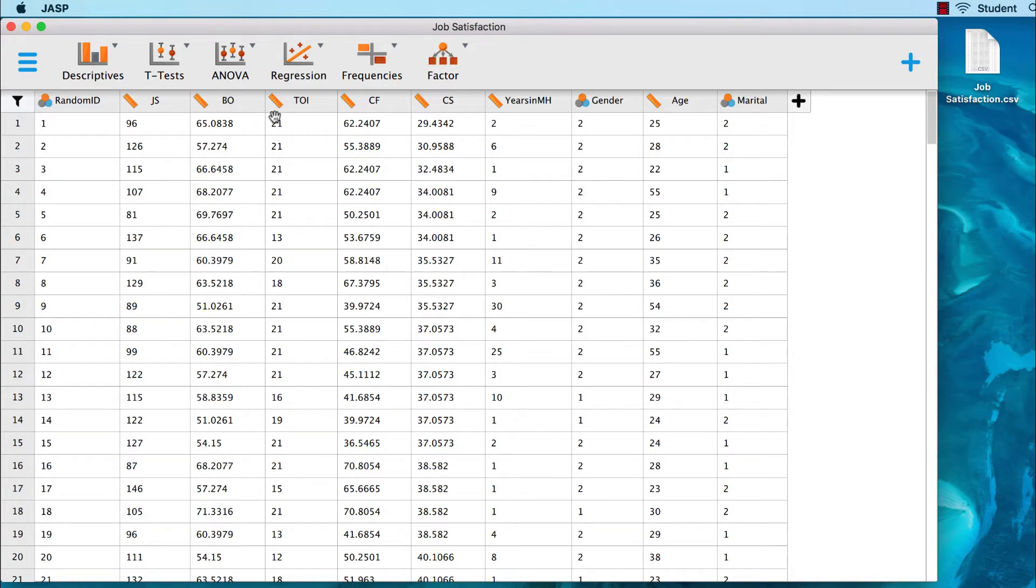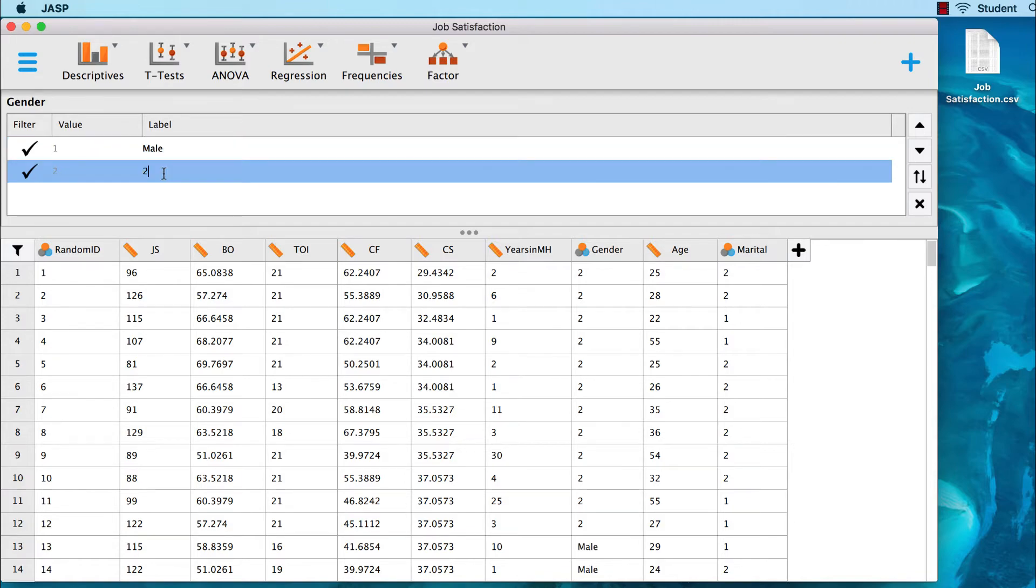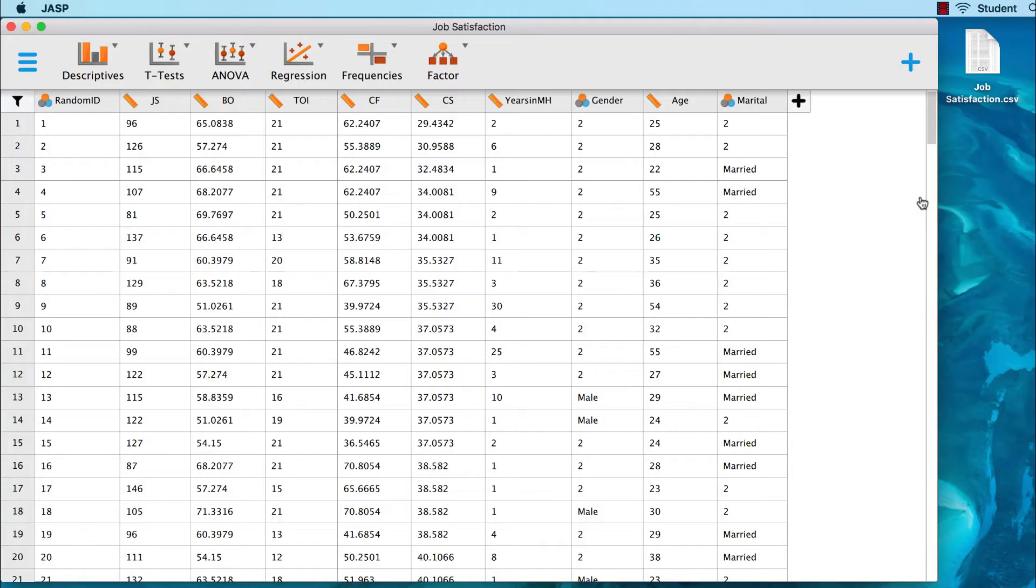The rest of the variables are set to scale, which you can see by the yellow ruler icon next to their names. Both gender and marital status are treated as nominal variables, or factors. So let's set those levels. For gender, hover over the name of the variable and click here to change labels. For this research, male was coded as 1, and female was coded as 2. Now click on marital. Marital status was coded as 1 equals married, and 2 equals unmarried. Those are all of the settings that we need to change. Now we are ready to do the analysis.